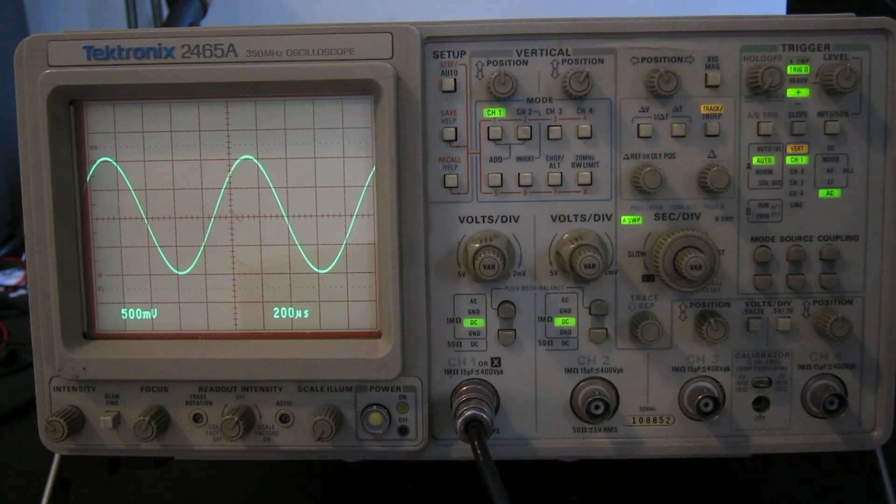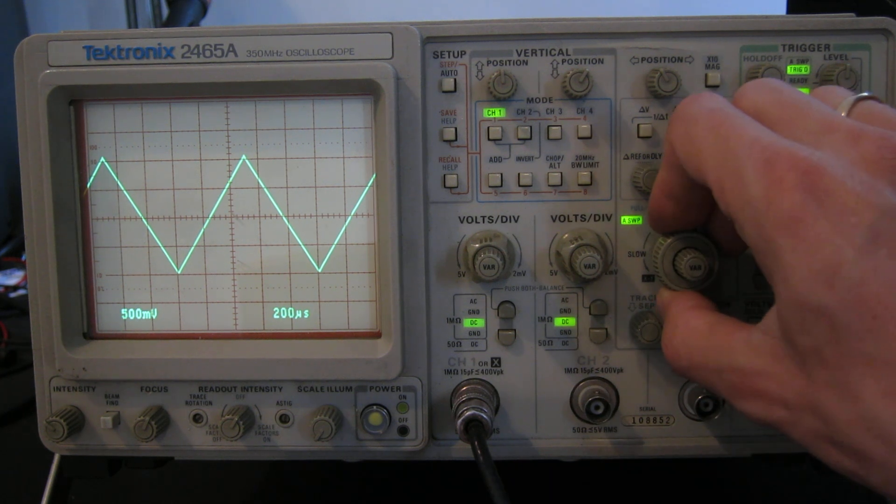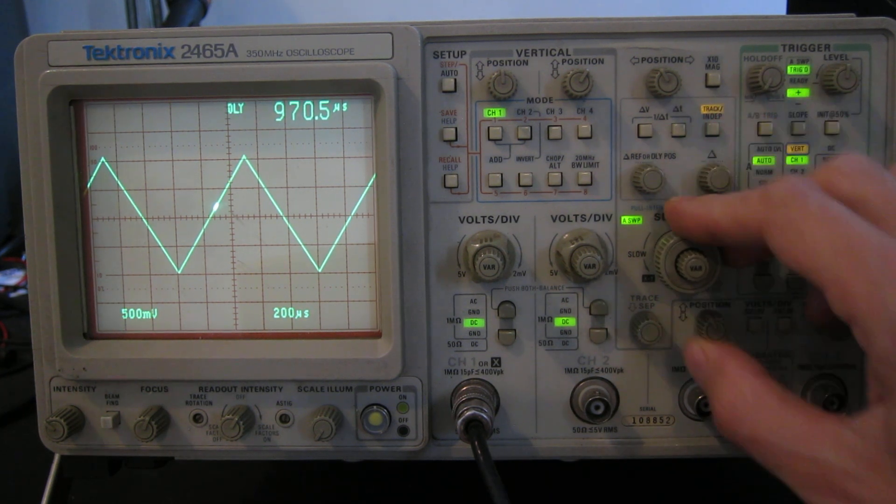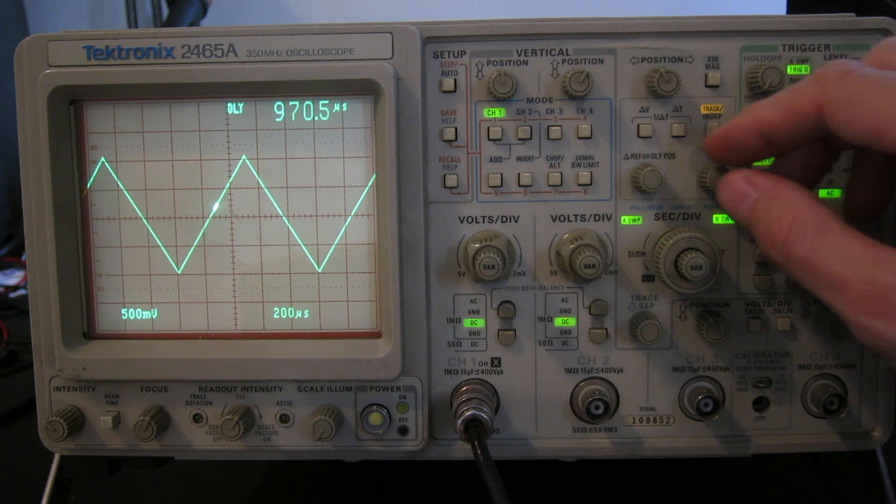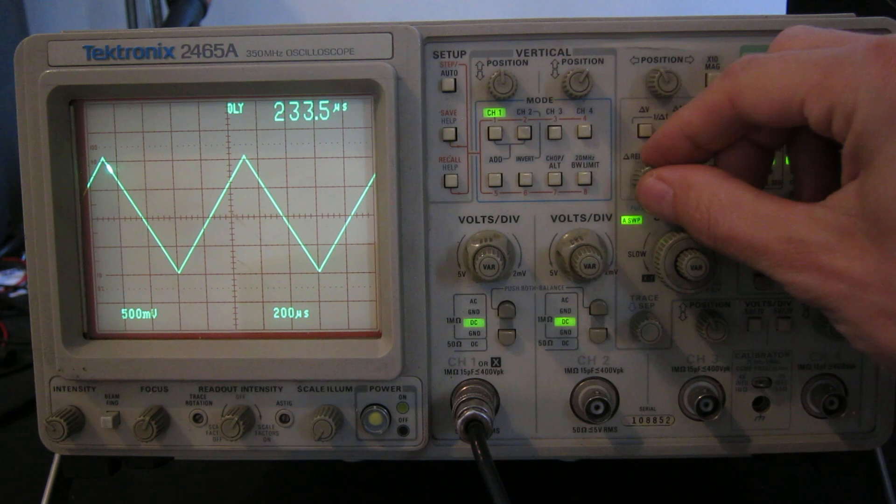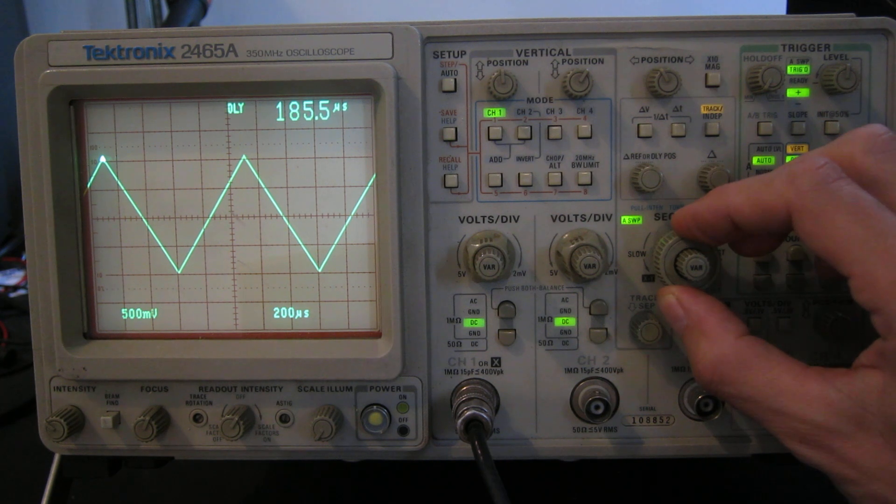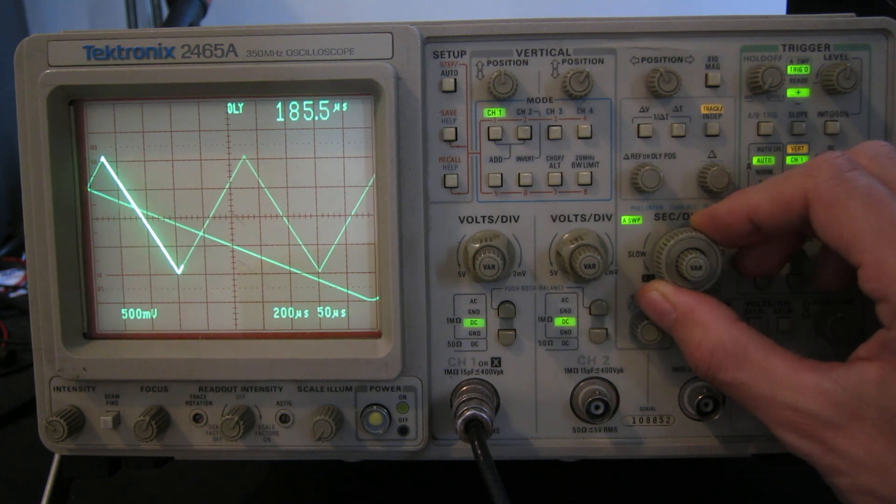And now if we go and demonstrate the delayed time bases, if I put a slightly more interesting waveform on, like a triangle wave. There we go. There's our triangle. And we can pull out the time base knob. And we have two time bases to play with. So I can, first of all, move the highlight to where I'm interested in, perhaps that point on the waveform there. And I push the knob in again.